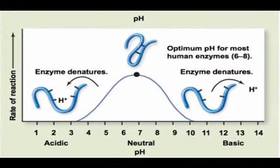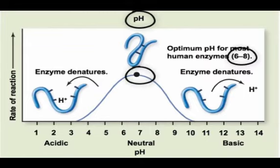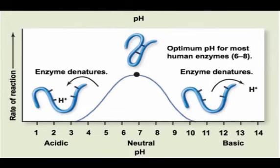Enzymes also function most efficiently at their optimal pH. While most function best at a pH of about 6 to 8, many are dependent on their location in the body. For example, enzymes in the stomach like a very low pH.